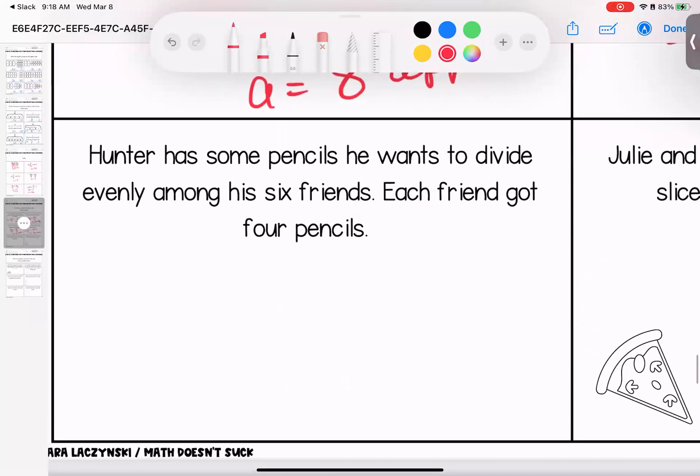Hunter has some pencils. He wants to divide evenly among his six friends. Each friend got four pencils. So he takes his pencils. He divides them amongst his six friends. Everybody gets four. But how many did he start with? He had 24.